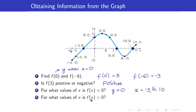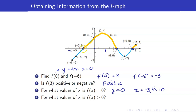For what values of x is f(x) greater than 0? When f(x) is greater than 0, the graph is above the x-axis. That part of the graph corresponds to x-coordinates from negative 3 up to 6. Note that negative 3 and 6 are not included because we want strictly greater than 0 — when x equals negative 3 or 6, y equals 0.